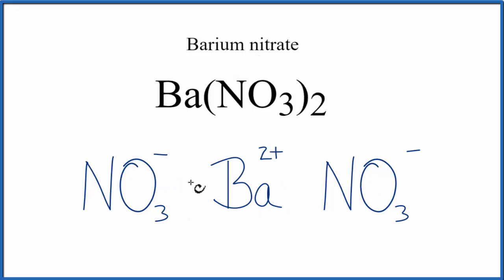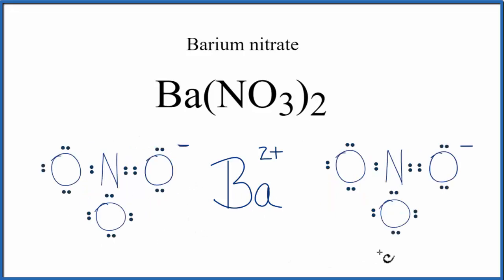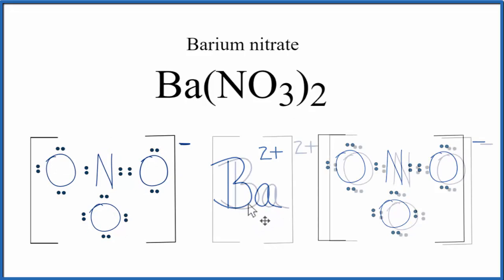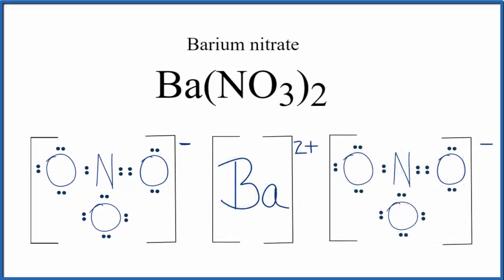Let's replace the nitrate ion here with a Lewis structure. We should put brackets around each of the nitrate ions, and you often see brackets around that metal ion, the cation. And that makes this the Lewis structure for barium nitrate.